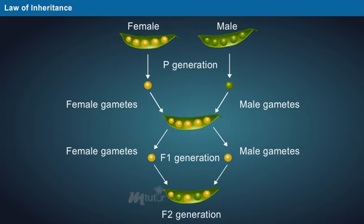Whereas, the F2 generation produced both yellow and green seeds in the ratio of 3 is to 1.